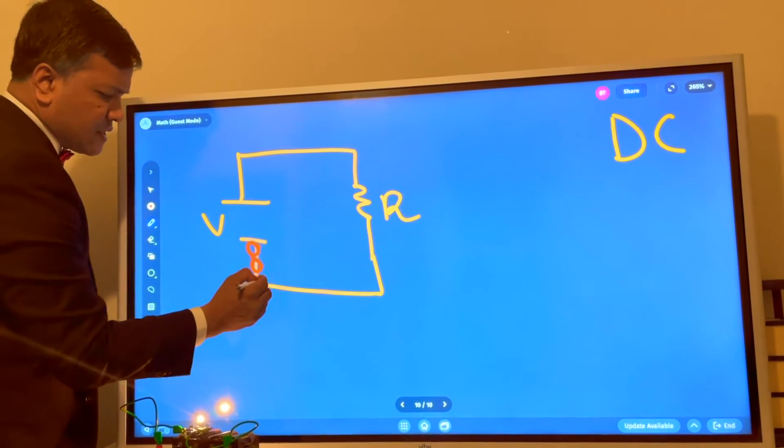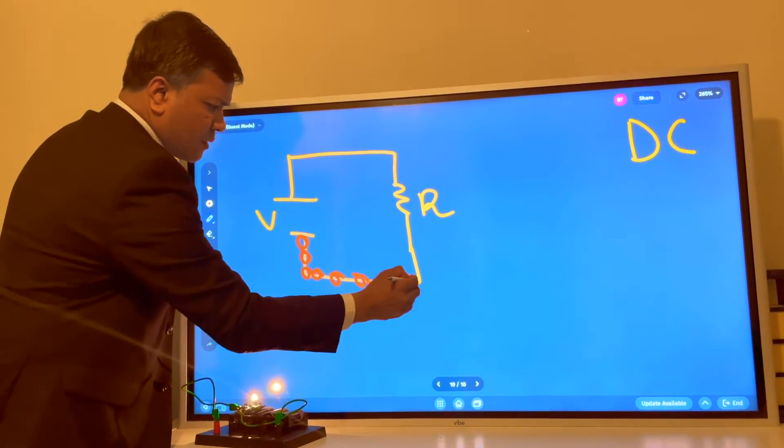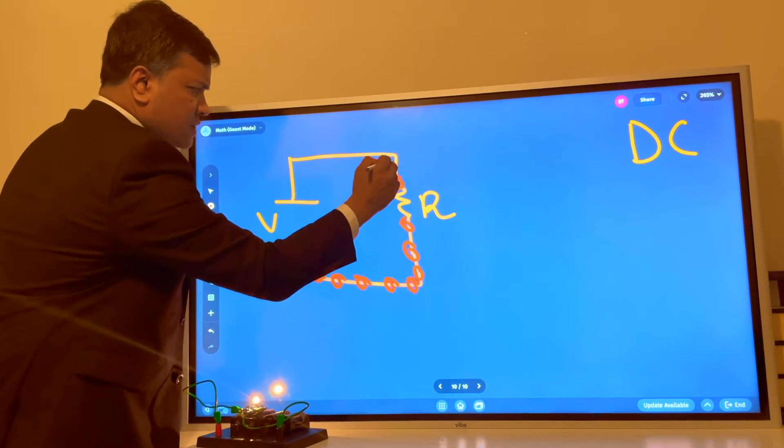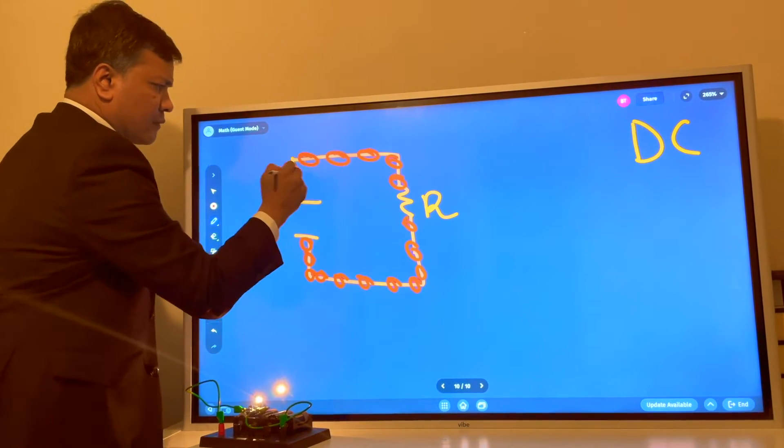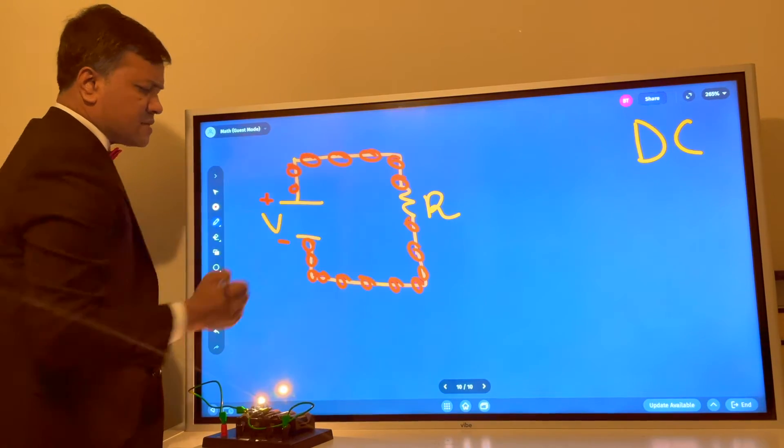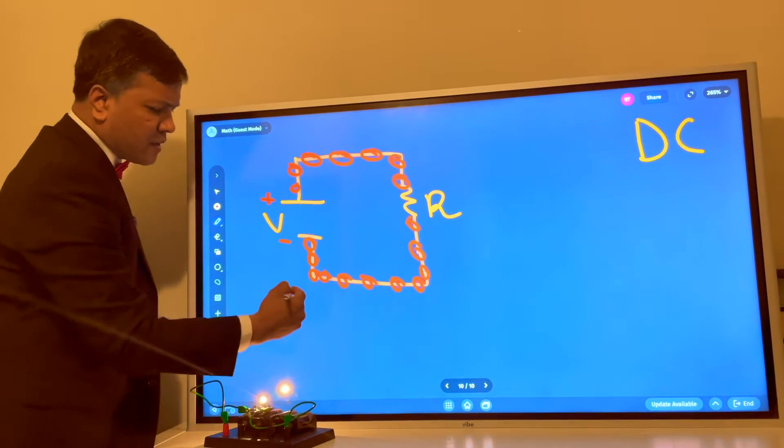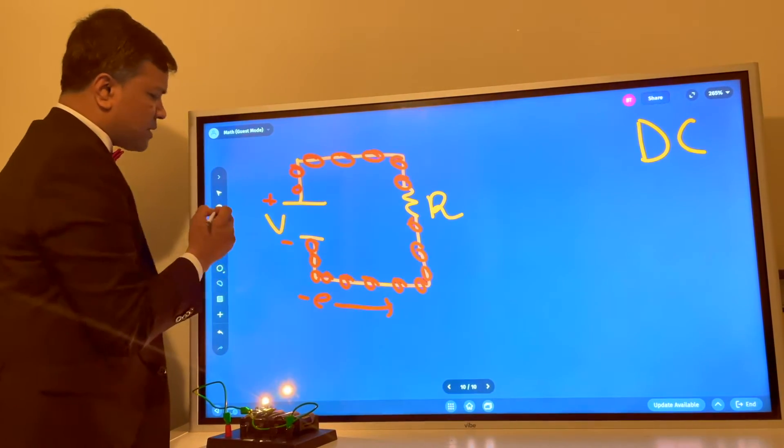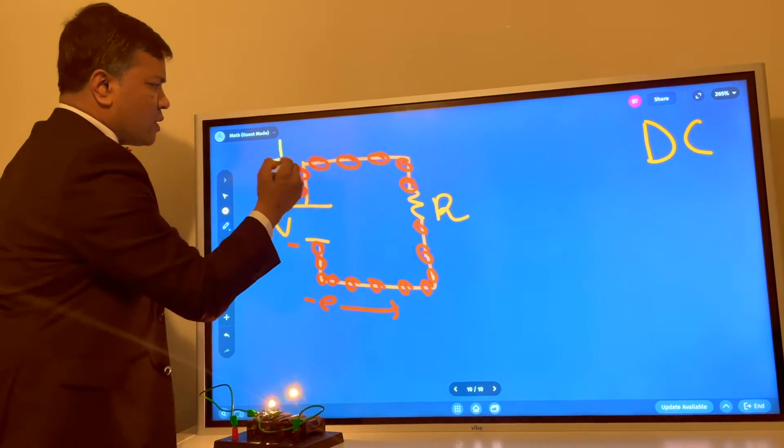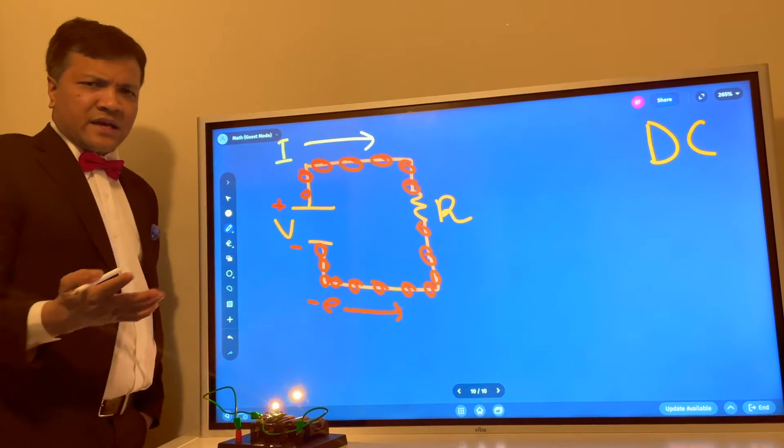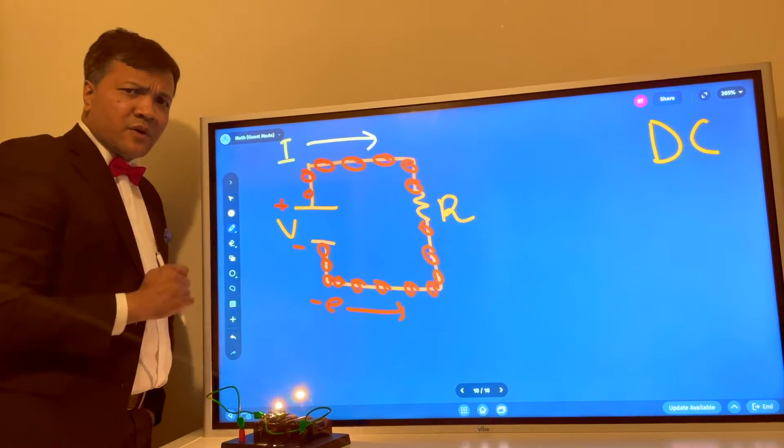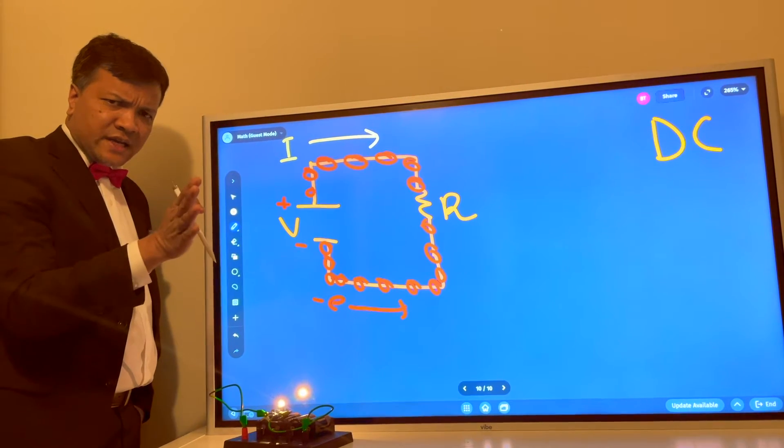The electrons move from negative terminal to the positive terminal. So this is the negative terminal, this is positive terminal. Electron moves from negative terminal to positive terminal, and current moves from positive terminal to the negative terminal. So in this video, I'm going to help you understand the complex circuit, a complex DC circuit using Ohm's law.